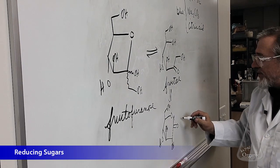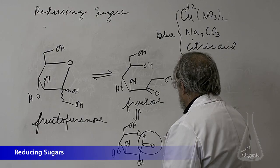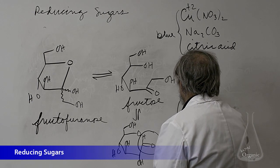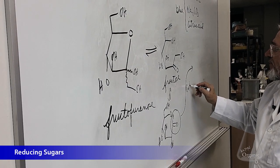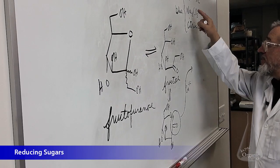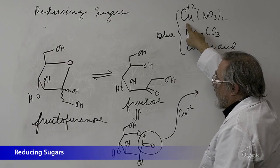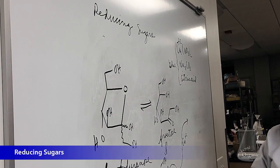And glucose then, because it has an aldehyde right here, can react then with the copper plus two component of Benedict's solution. And what do you get?